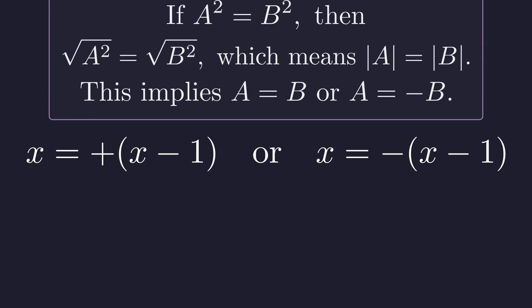Either x equals x minus one, or x equals negative x minus one. The first case is the one we already looked at, and it just gives us that contradiction. So nothing there. But the second case, that's where the real solution is hiding.